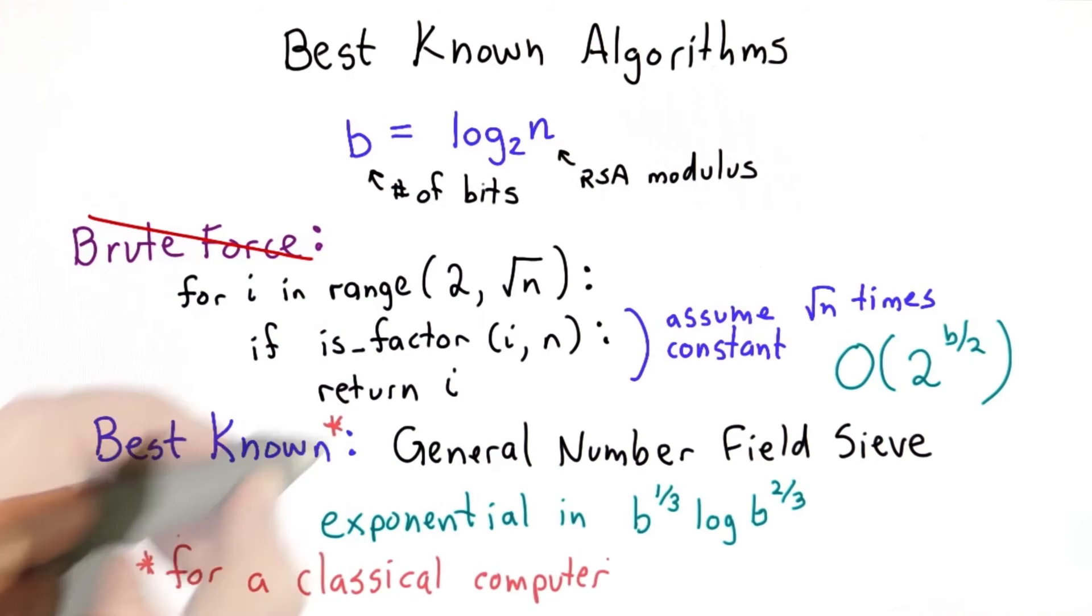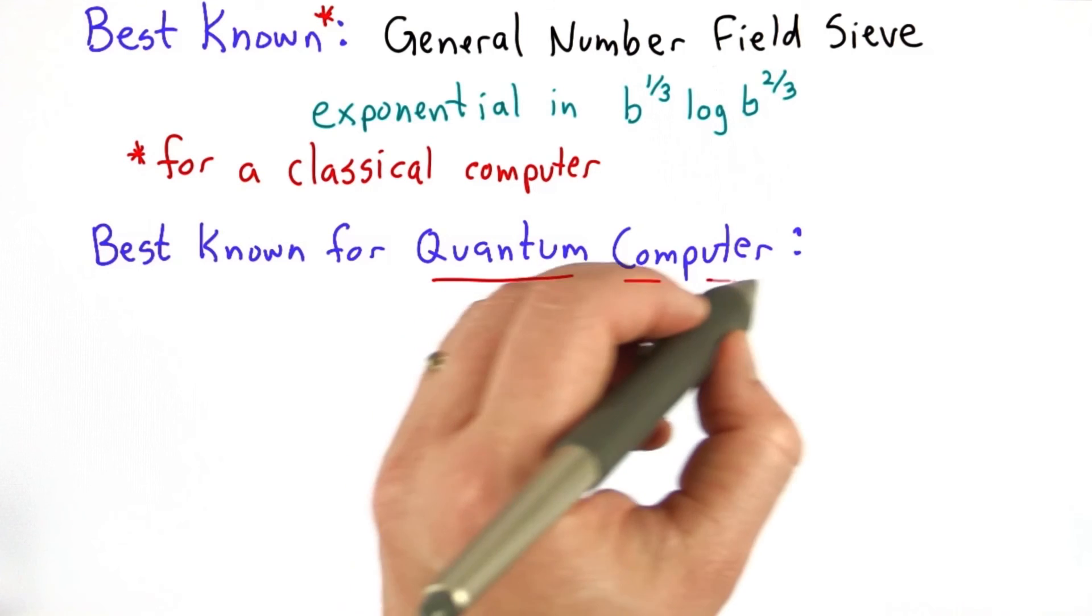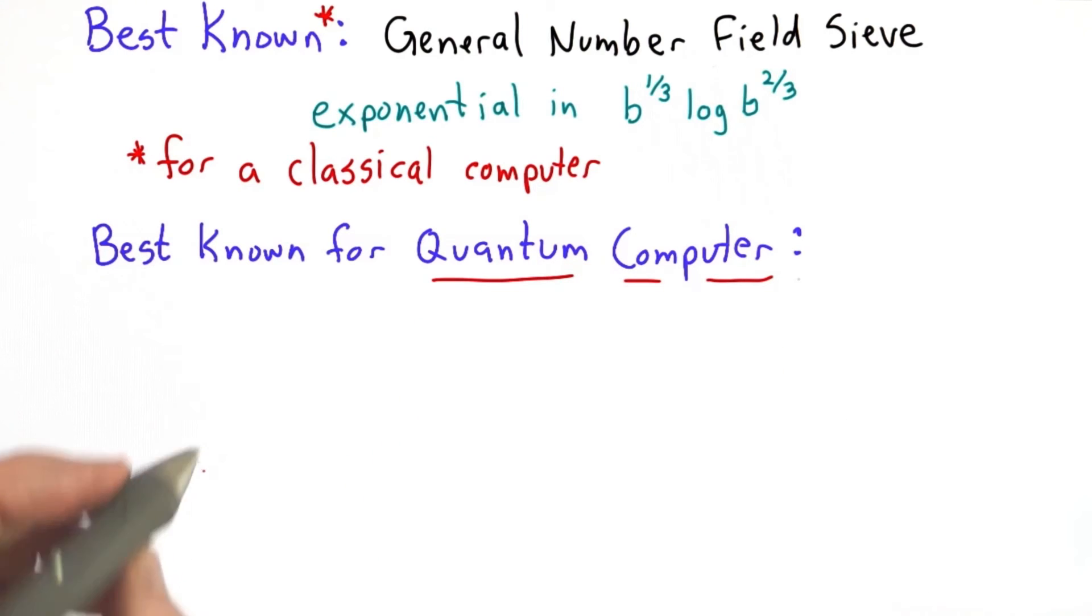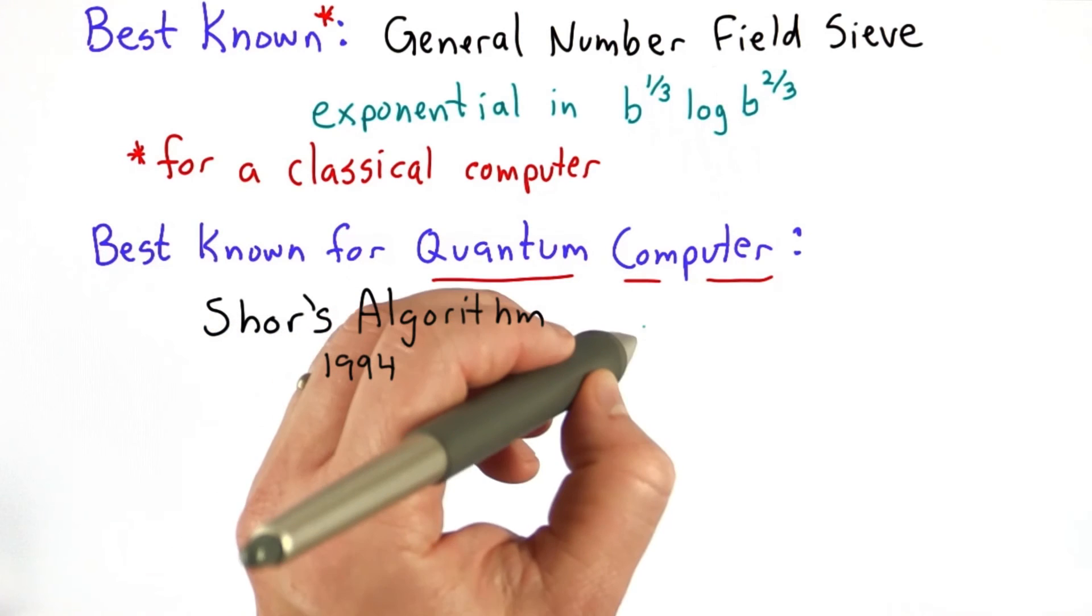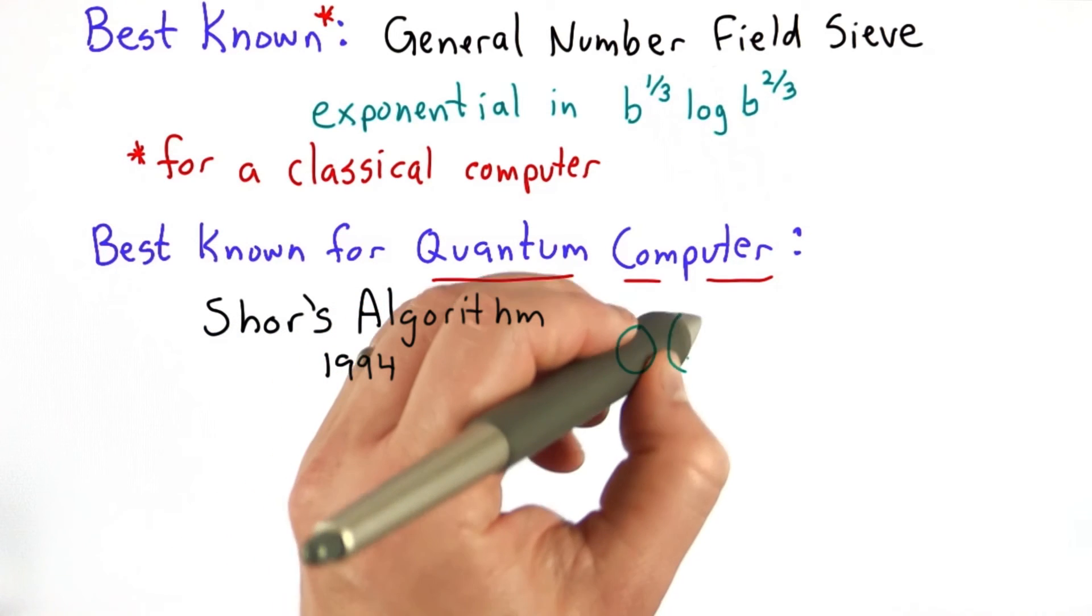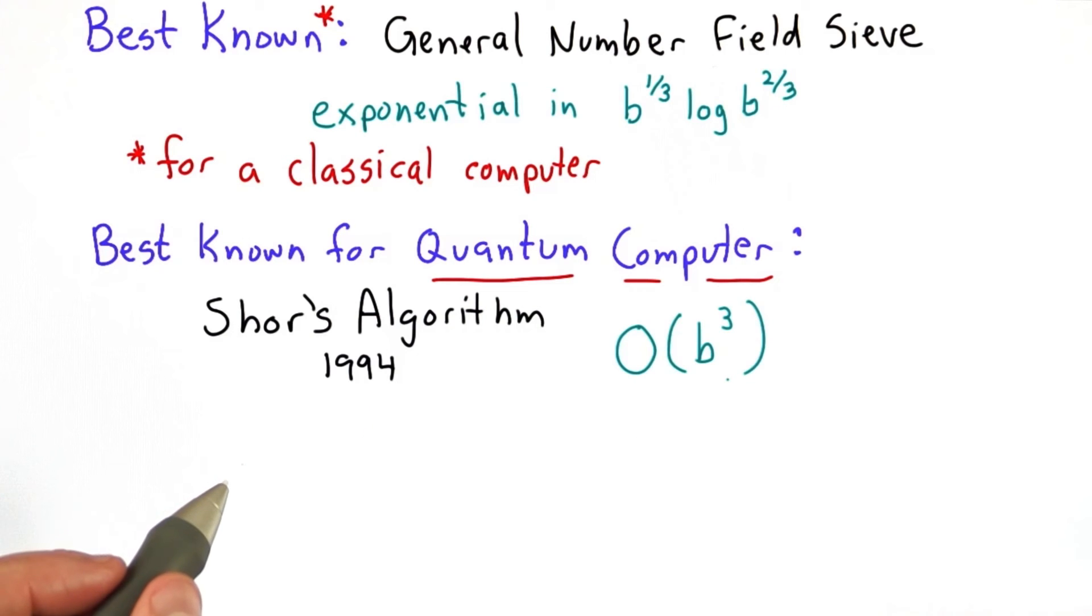One important caveat, this is the best known factoring algorithm assuming a classical computer. If you have a large quantum computer, which no one does yet, there's a faster algorithm, which is known as Shor's algorithm, which was created by Peter Shor in 1994. And that actually has a running time that's polynomial in the number of bits.